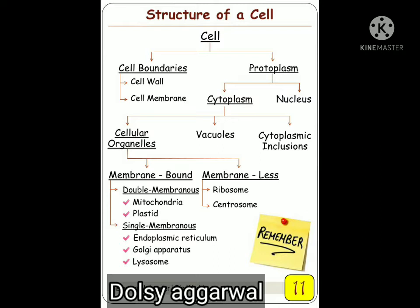Cell has cell boundaries and protoplasm. The boundaries of the cell are the cell wall and cell membrane. In a bacterial cell, the cell coat is present. But in eukaryotic cells, if it is a plant, then both cell wall and cell membrane will be present. If it is an animal, then only cell membrane will be present.